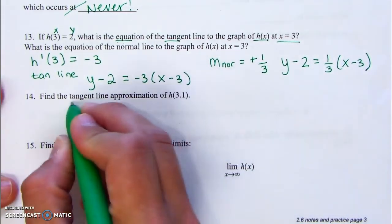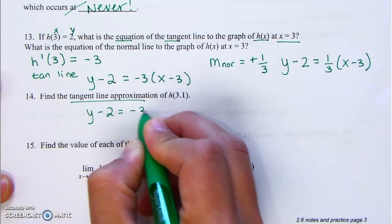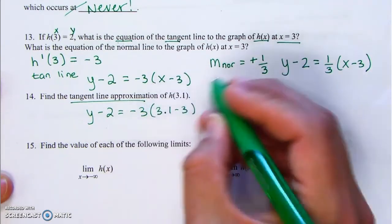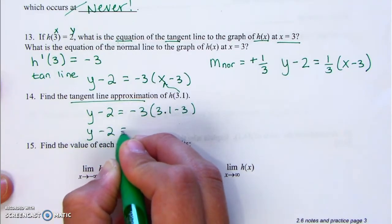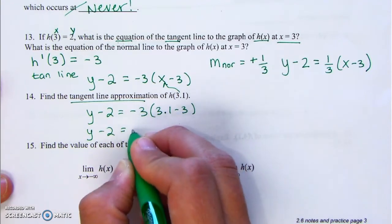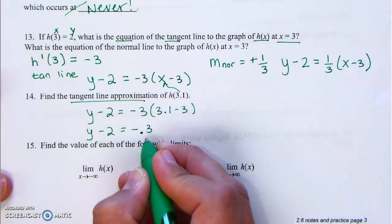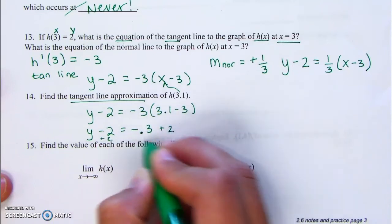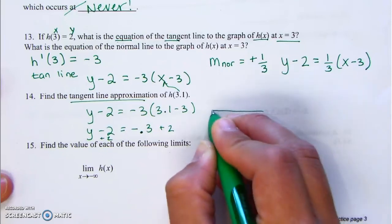Find the tangent line approximation. We plug x equals 3.1 into the tangent line equation. 3.1 minus 3 is 0.1, so it's negative 3 times 0.1 which gives negative 0.3. Adding 2: 2 minus 0.3 equals 1.7.